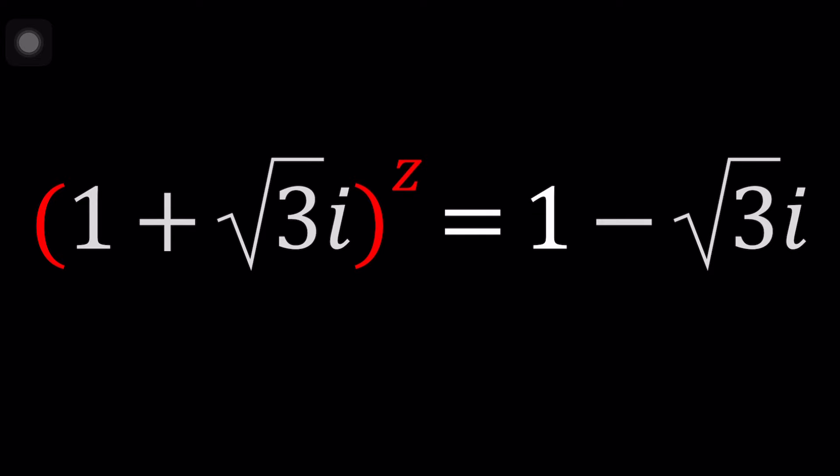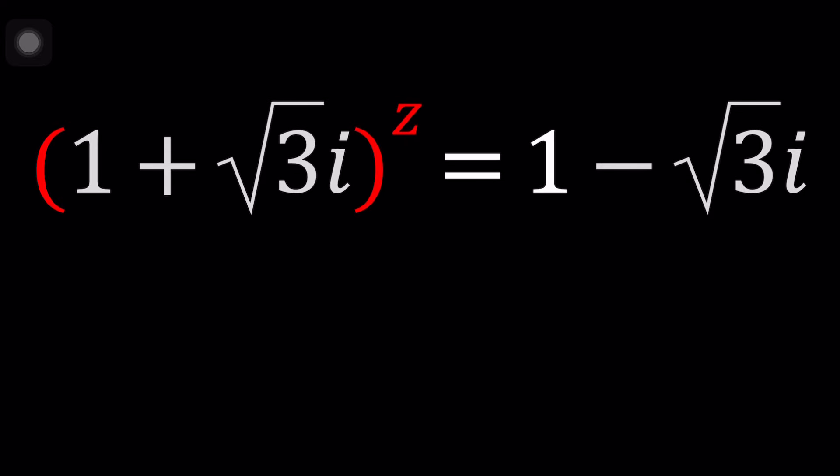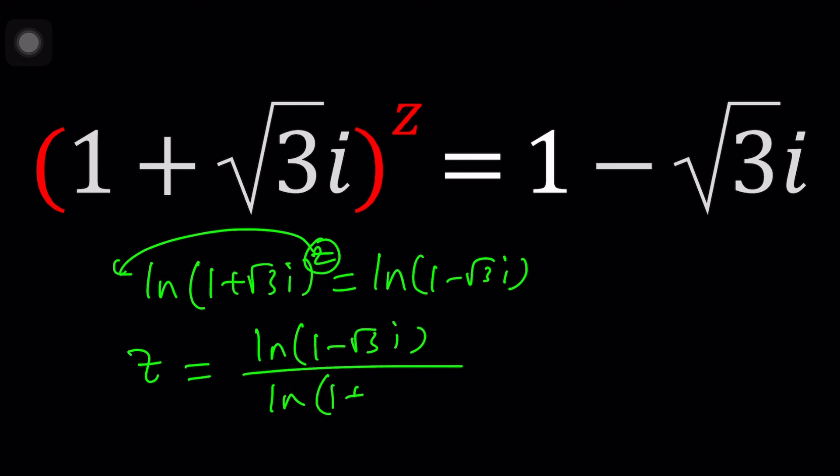Now, some of you may be new to complex numbers. Go ahead and check my lecture videos if you're new to complex numbers. I made nine basic videos. So some of you might be thinking, why don't we just ln both sides? We're going to get ln this equals ln this. And then we can go ahead and bring the z to the front and then divide both sides by ln 1 plus root 3i, which should give us the answer, right? That would be the cheap quick solution.